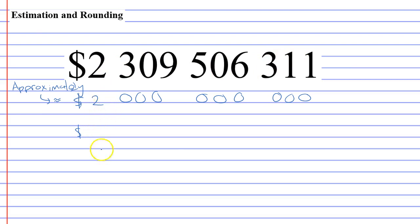Sometimes you might not want to just have one digit, you might want to pick two of them. So you might keep the two and the three and make the rest zero and say it's approximately two billion three hundred million dollars. There's also another symbol you can use which is an equal sign with a dot above and below, and they basically mean the same thing.